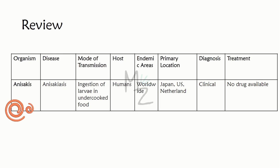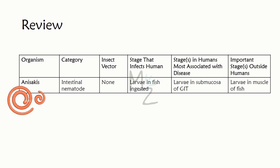Review of Anisakis: it causes anisakiasis; transmission is via ingestion of larvae in undercooked seafood; hosts are human beings; endemic in Japan and the US; primary location is the intestine and stomach; diagnosis is made clinically; no drug is available for treatment. It is an intestinal nematode with no insect vector; infective stage is larvae in fish; disease-associated stage is larvae in mucosa of GI tract; important outside-host stage is larvae in fish muscle.